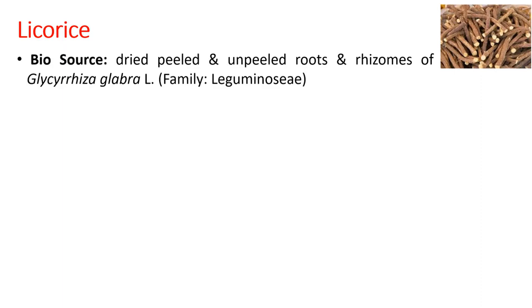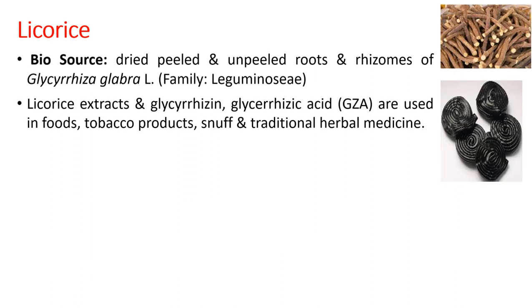Here we will have a look at liquorice first. Liquorice contains dried peeled or unpeeled roots or rhizomes of Glycyrrhiza glabra, belonging to the family Leguminosae. Liquorice extracts are directly sold into the market, or sometimes standardized liquorice extracts containing glycyrrhizin or glycyrrhizinic acid are supplied. These are routinely used in food products, tobacco products, as a snuff, and also majorly in traditional systems of medicine.